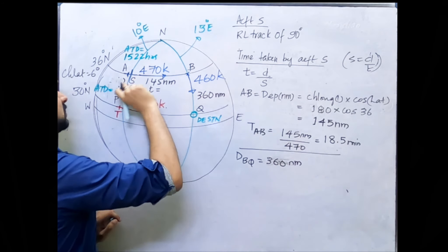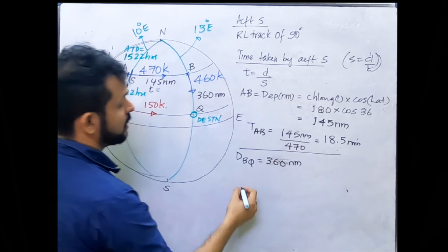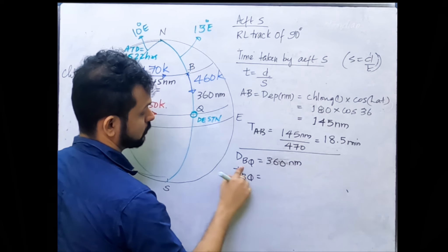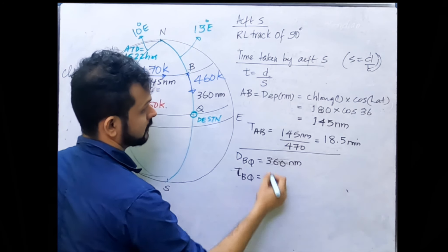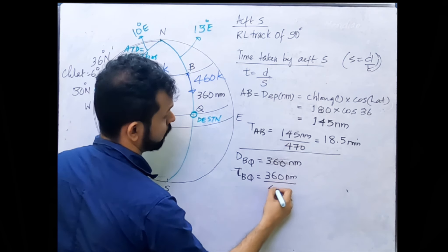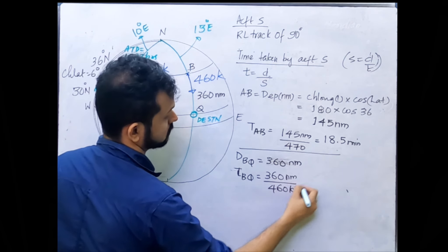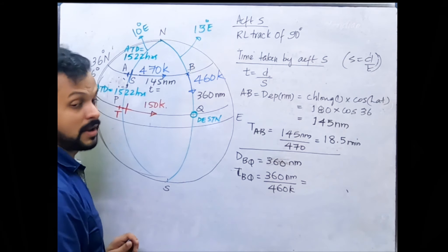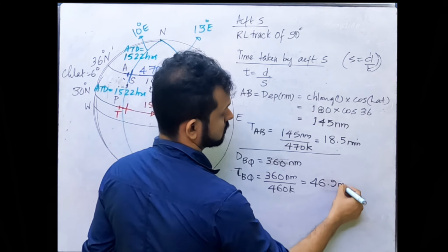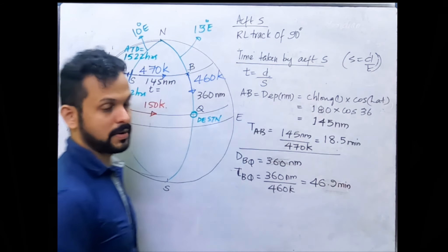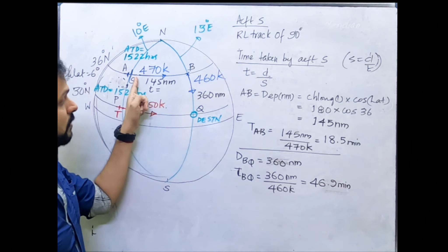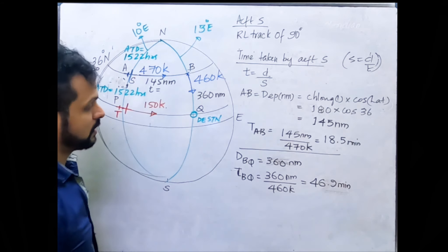The speed for this leg is 460 knots. So the time taken from B to Q is 360 ÷ 460, which is approximately 46.9 minutes. Therefore, the total time taken by Aircraft S to travel from A to Q via B is 18.5 + 46.9 = approximately 65.4 minutes.